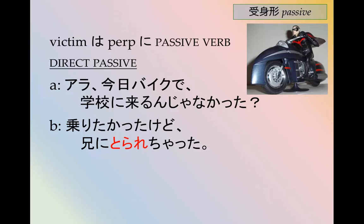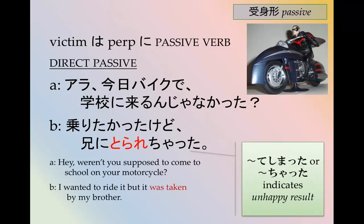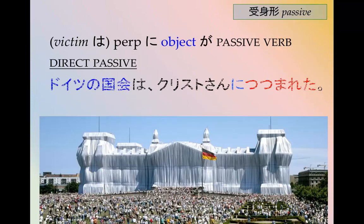Weren't you going to come to school today by motorcycle? Here we have 取られる plus the てしまった or ちゃった form, which indicates an unhappy result — 取られちゃって. It was taken by my brother. That's another, more obvious example of the direct passive.